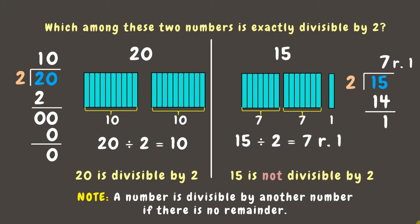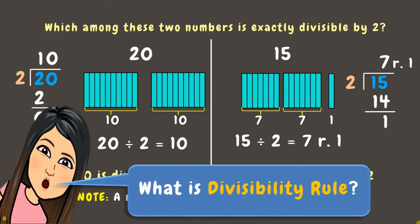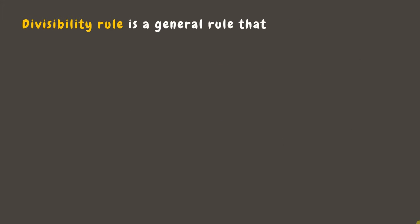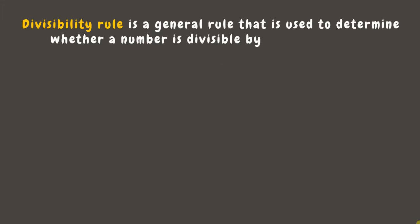Now, for us to easily know if a number is divisible by another number, let's learn about the divisibility rule. The divisibility rule is a general rule that is used to determine whether a number is divisible by another number.